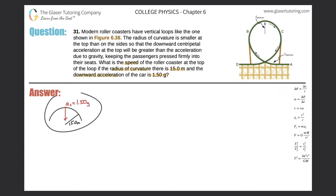All right, so I drew a picture here. Here's the radius of curvature, it's 15 meters, and it says that the downward acceleration of the car at the top is 1.5 g's. But what do we notice that's special about this?